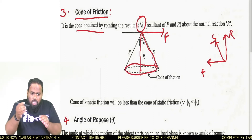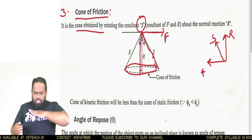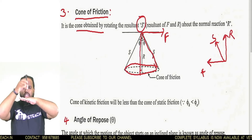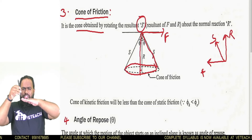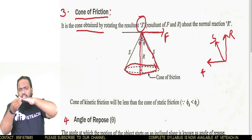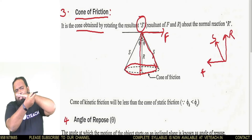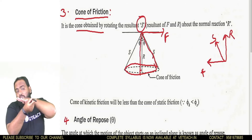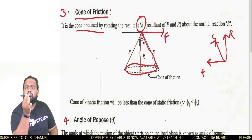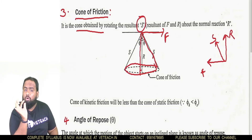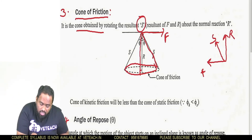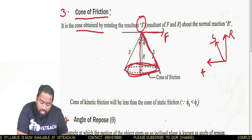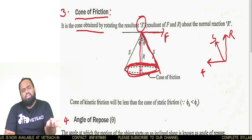If you rotate the applied force 360 degrees, the resultant of the friction and reaction S will make a perfect cone. For example, here is the body — if I apply force in this direction, friction acts in the opposite direction. If I start rotating the applied force on the body in 360 degrees, the resultant of the reaction and friction will make a perfect cone. That is called the cone of friction.